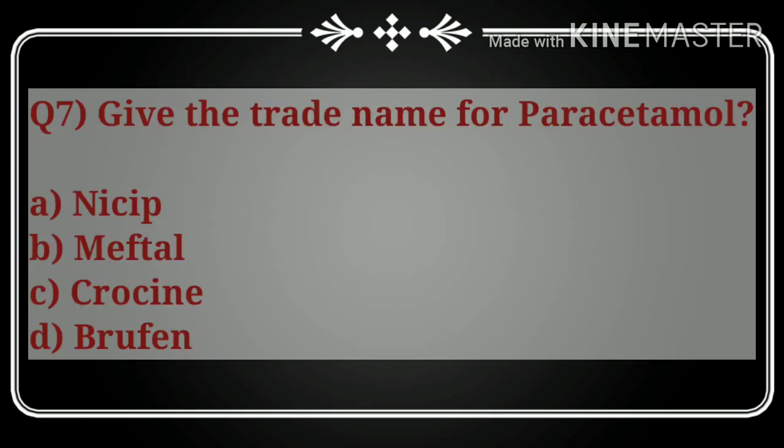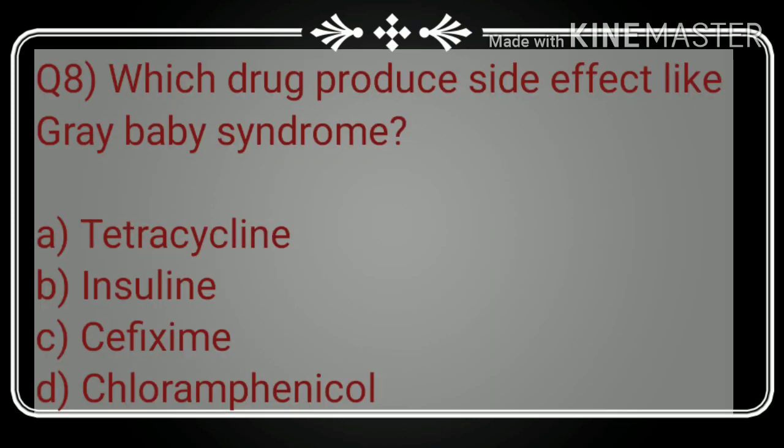Question number seven: give the trade name for paracetamol. The options are: A) nicip, B) meptal, C) crocin, and D) ibuprofen. The correct answer is option C, crocin. Crocin is the brand name or trade name for paracetamol. Now we will discuss question number eight: which drug produces the side effect of gray baby syndrome?